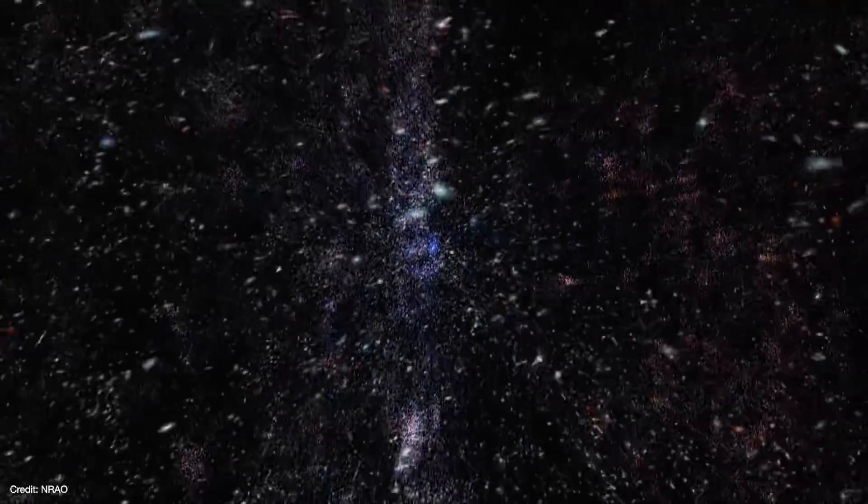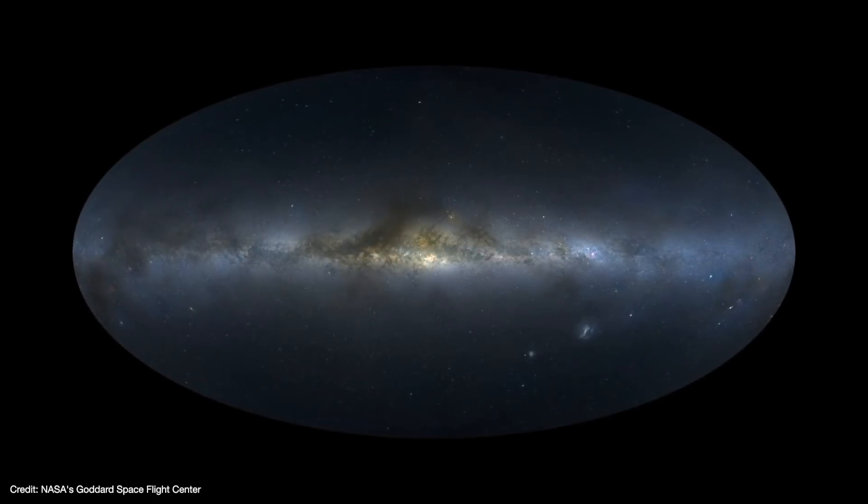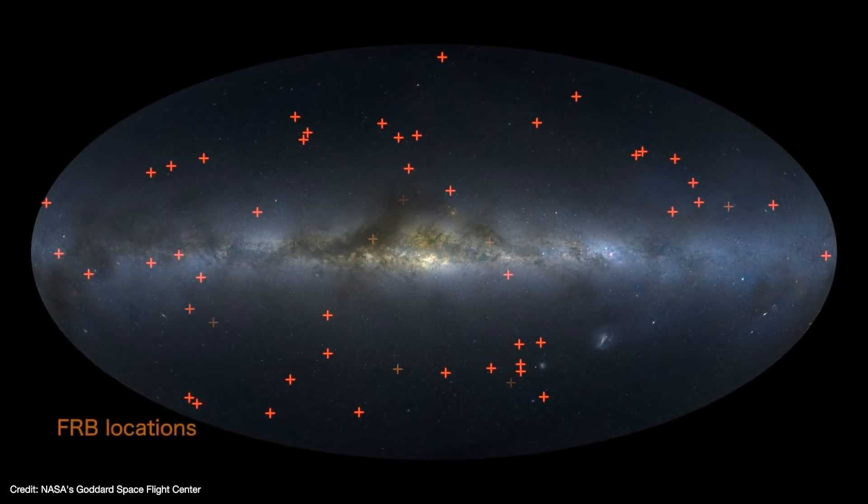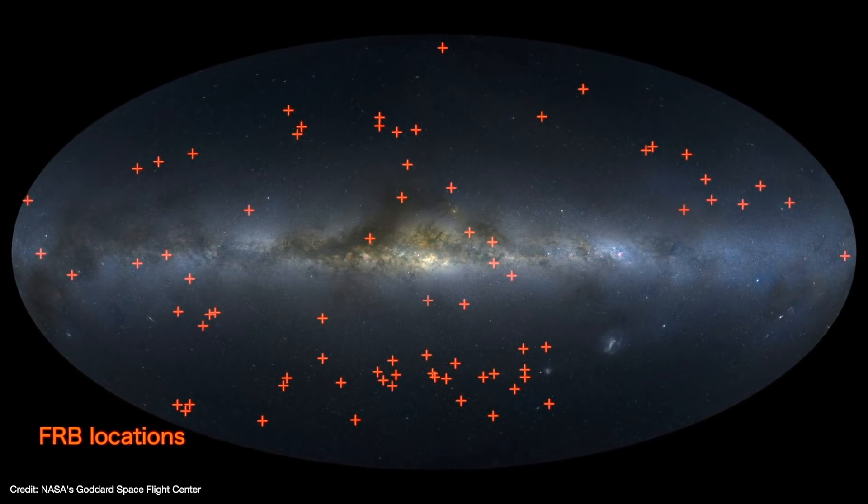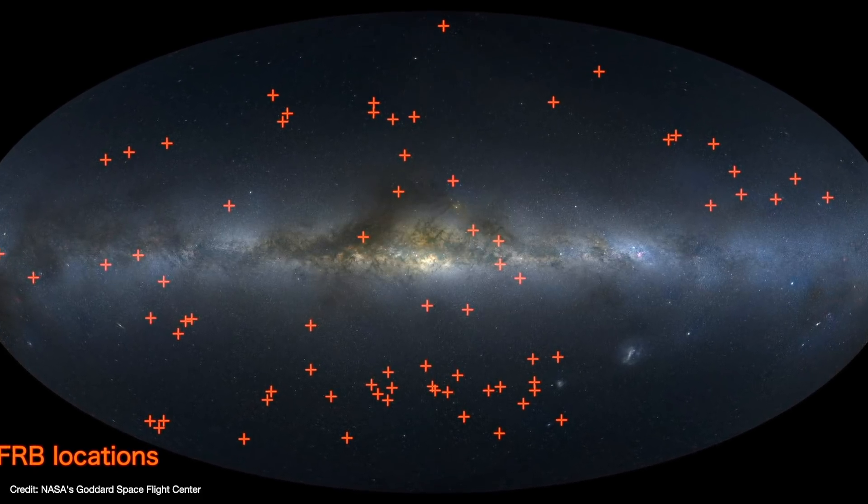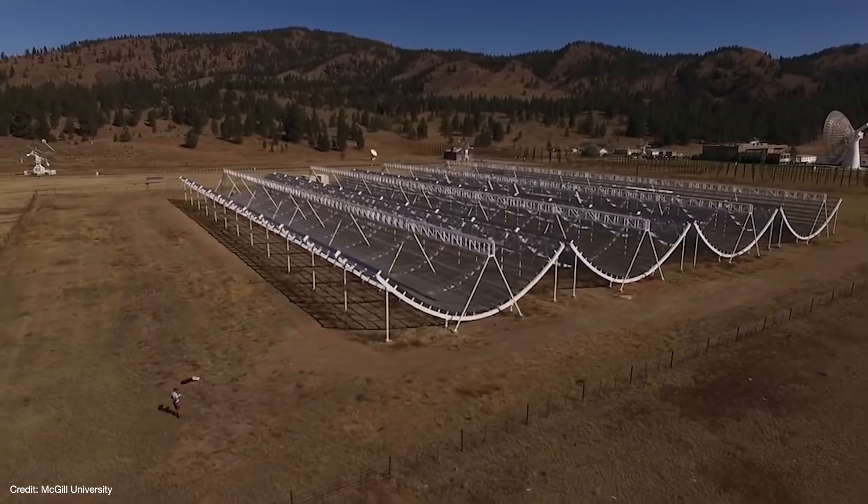But like anything else in astronomy, answering one question raised new ones. Like, do FRBs repeat? Are they all at cosmological distances? And are they only a thing in dwarf galaxies? Or can they happen in larger ones? To answer those questions, a lot more FRBs would need to be found. But FRBs are transient events that could go off anywhere in the sky at any time. There needed to be a way of scanning a large region of the sky at once, yet still be able to pinpoint an FRB's position.